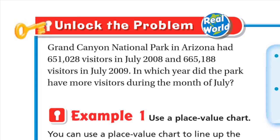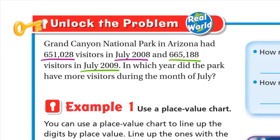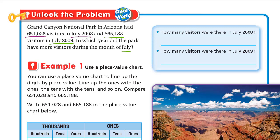Grand Canyon National Park in Arizona had 651,028 visitors in July 2008 and 665,188 visitors in July 2009. In which year did the park have more visitors during the month of July? In 2008 it was 651,028, and in 2009 it was 665,188. We need to compare these two numbers.